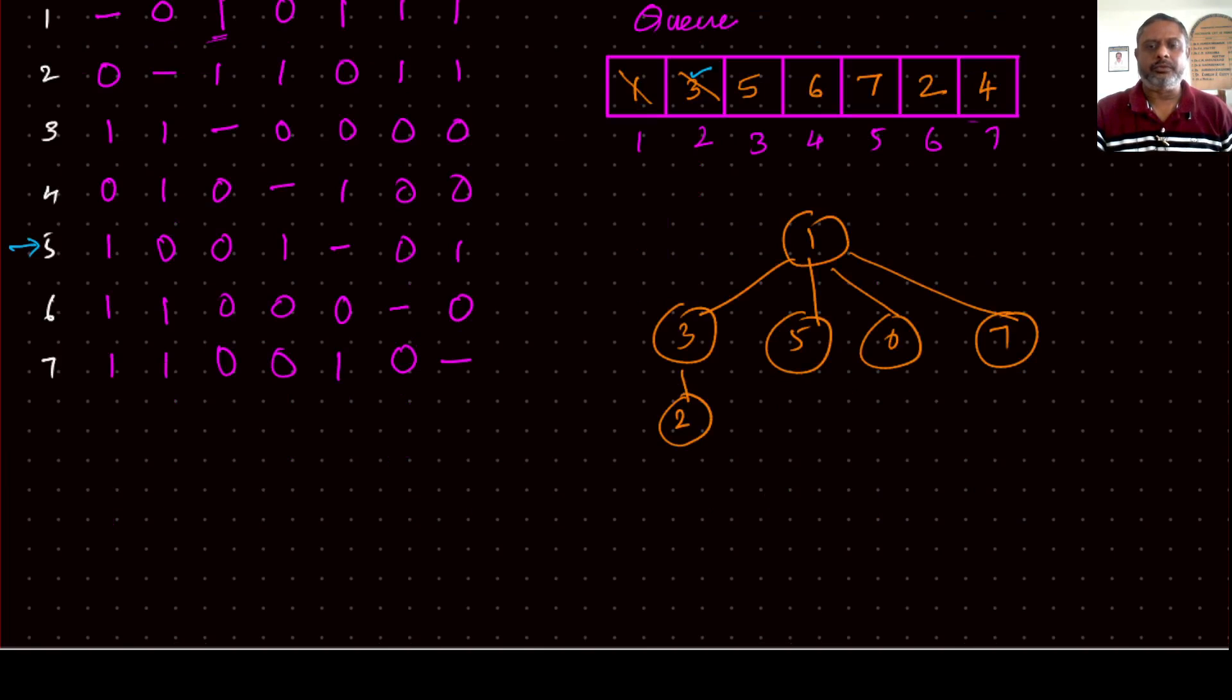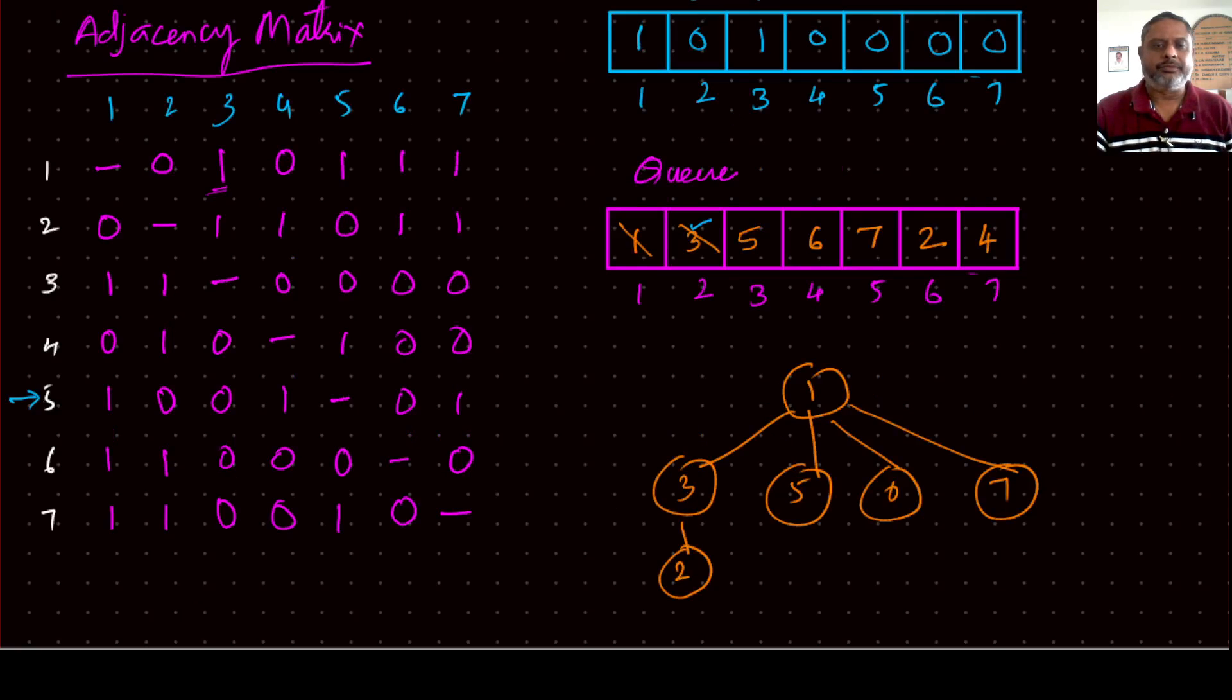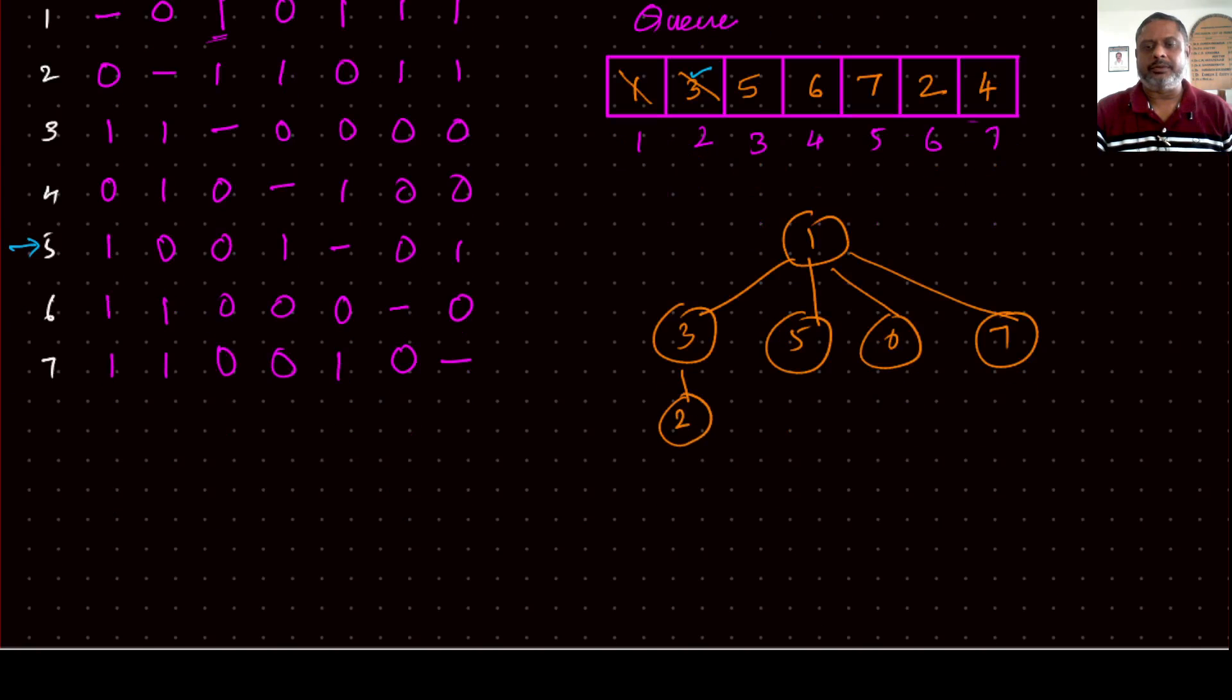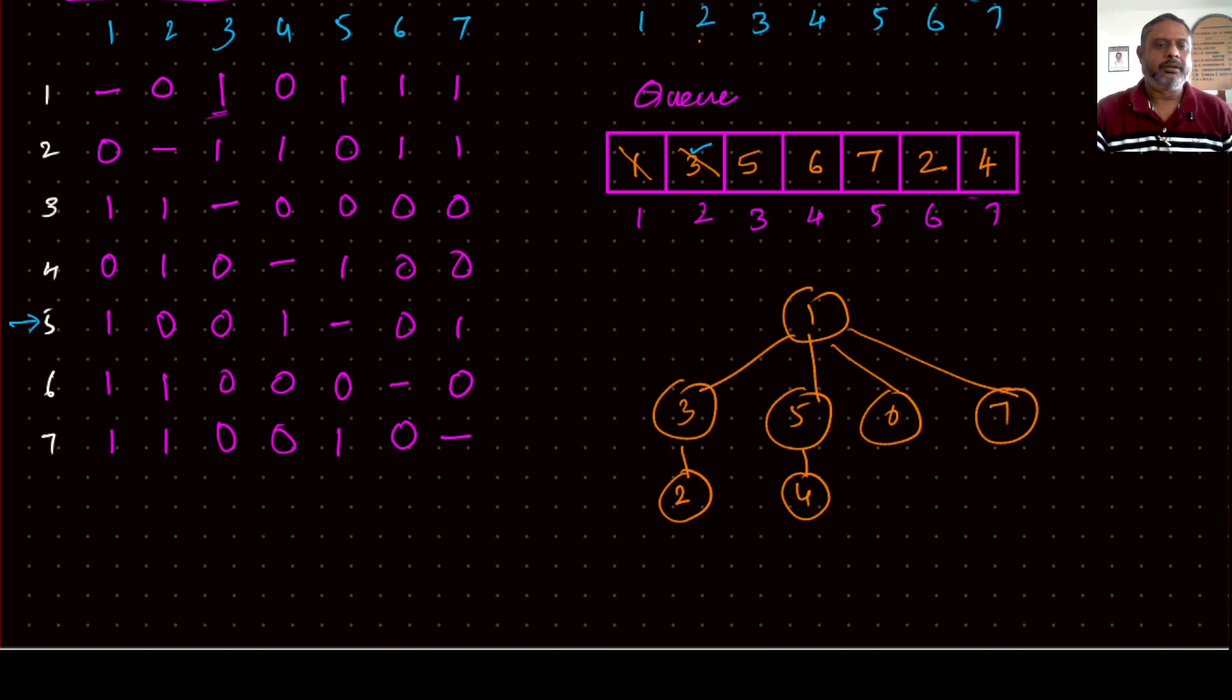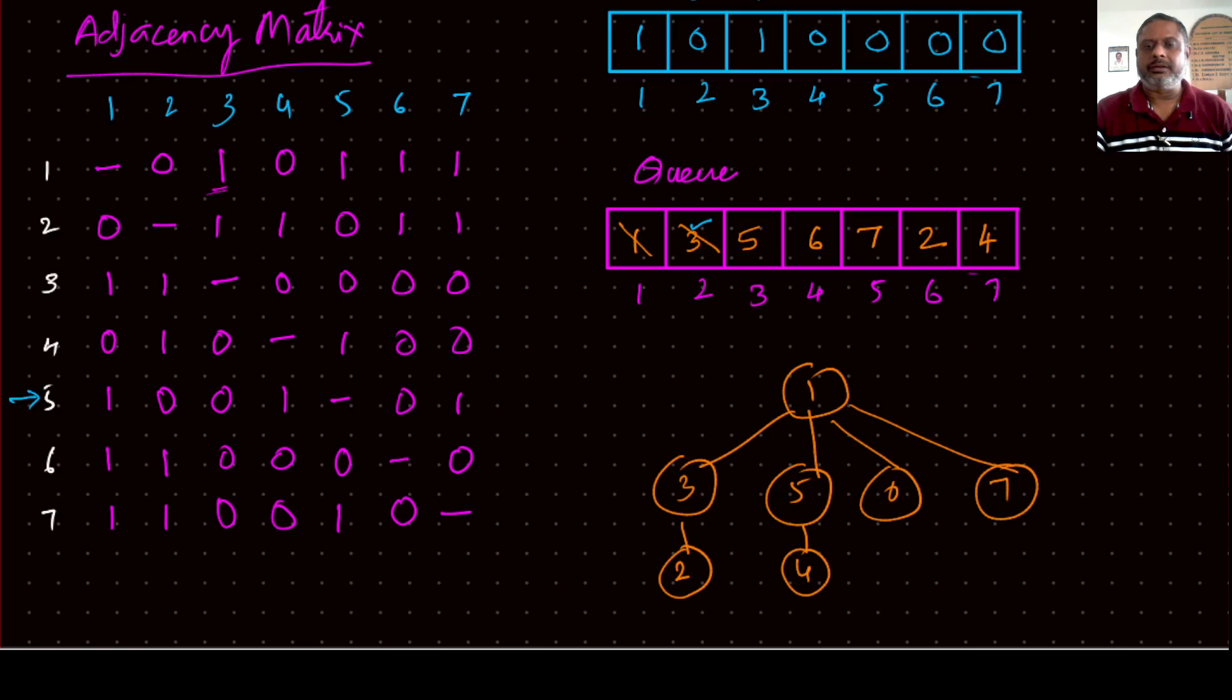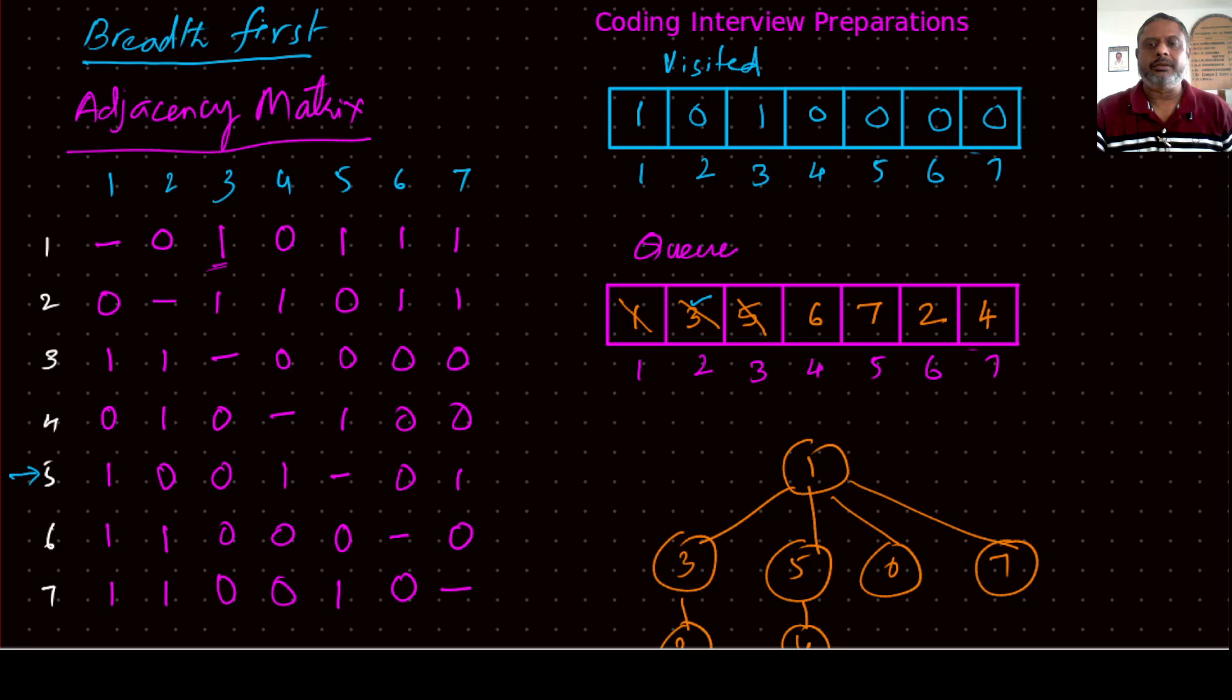Then from five, we see one cannot be added, four can be added, so from five, four is added. Then seven, seven is already there in the queue, therefore we cannot add seven to it. What else? That's it. So work of five is over, so then declare that five is visited.